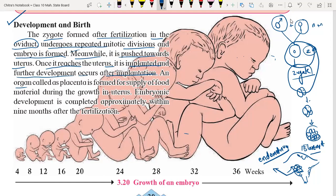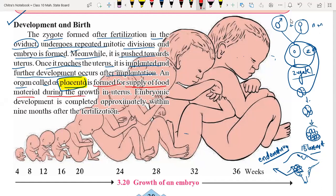Food, nutrients, oxygen — whatever is required for the development of the baby — is supplied through the placenta. It is very important. The placenta is the organ which supplies nutrition to the developing baby in the uterus. It is formed of food material, and oxygen is also supplied during the growth of the child in the uterus.